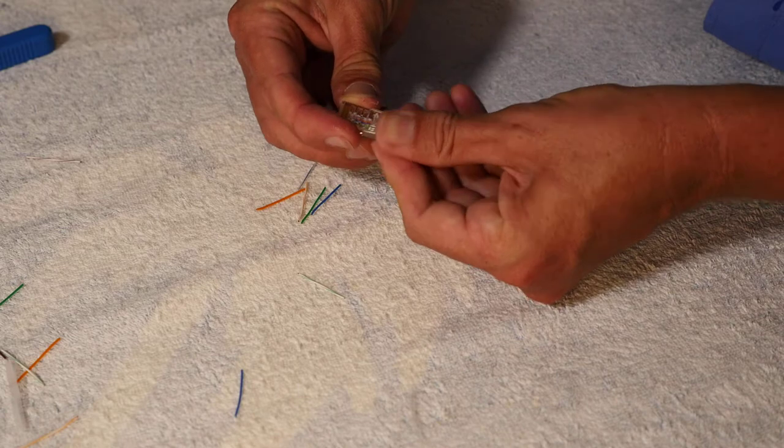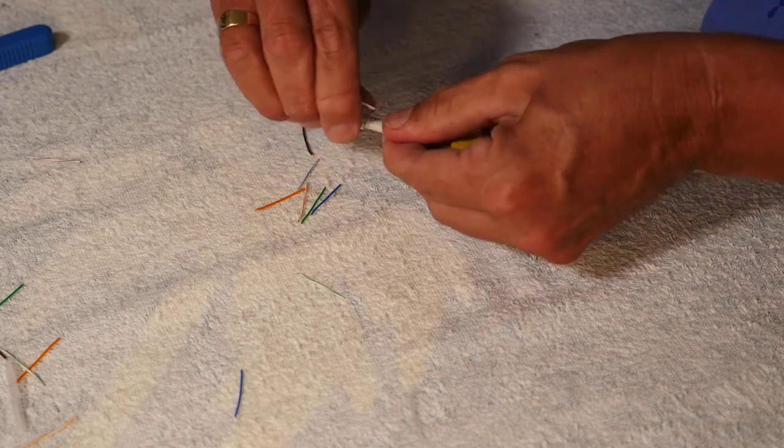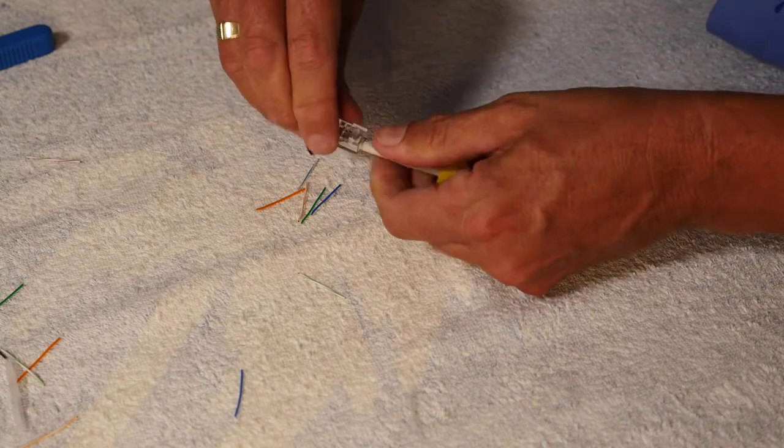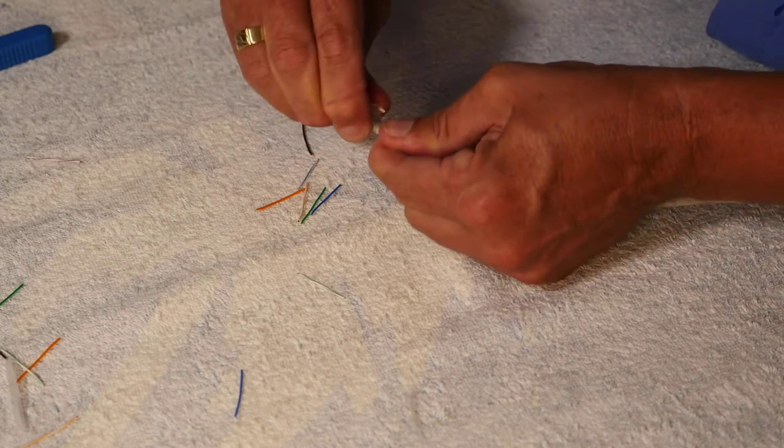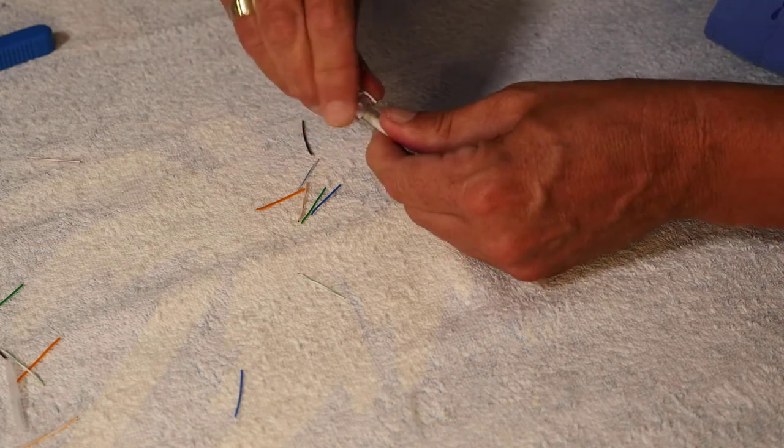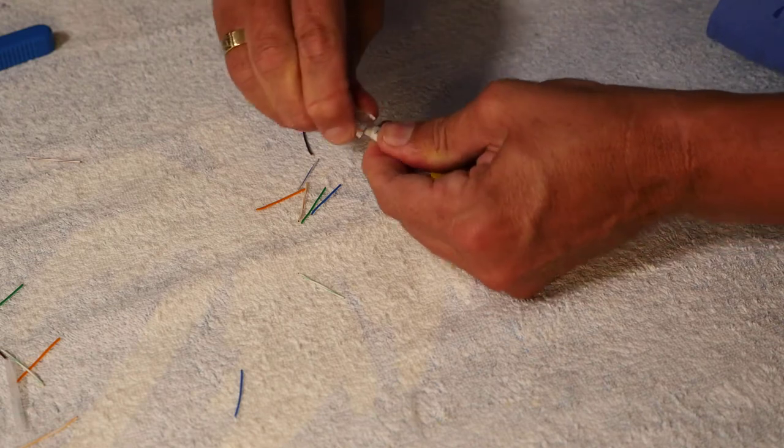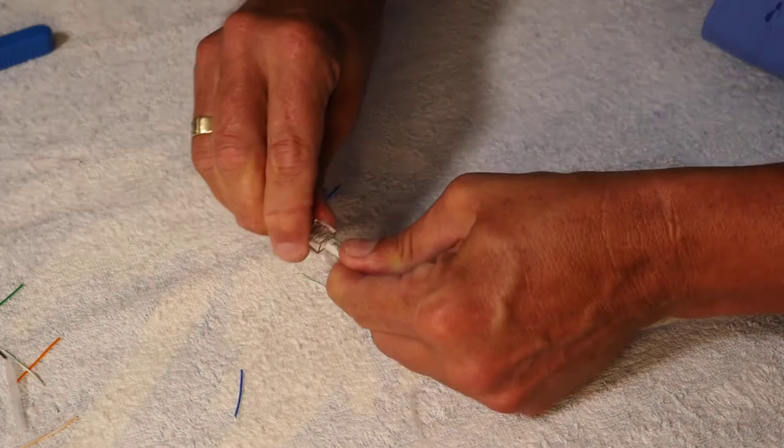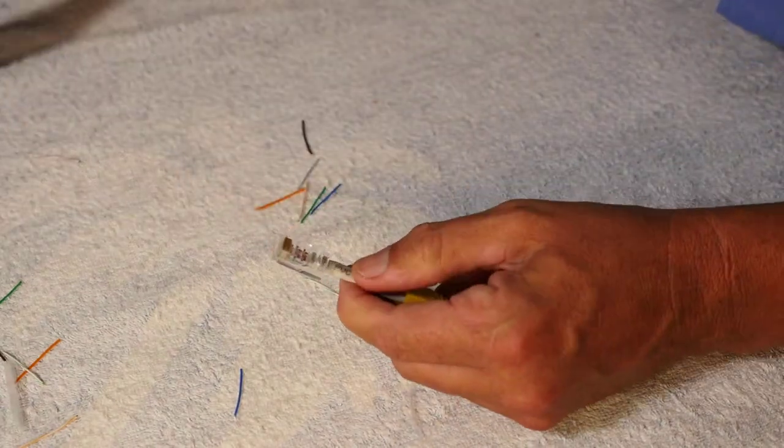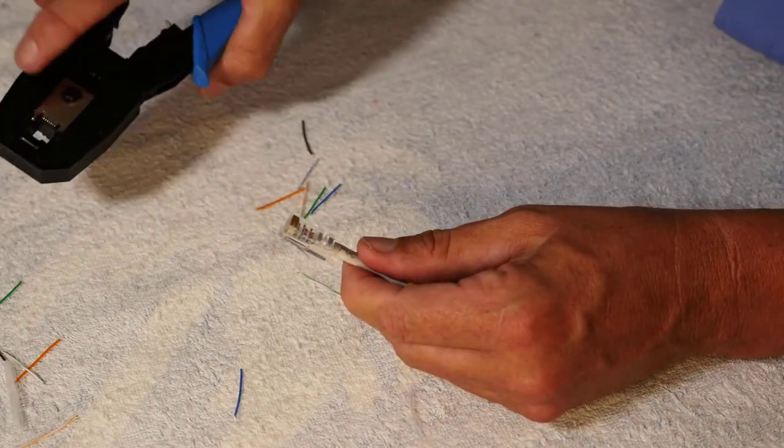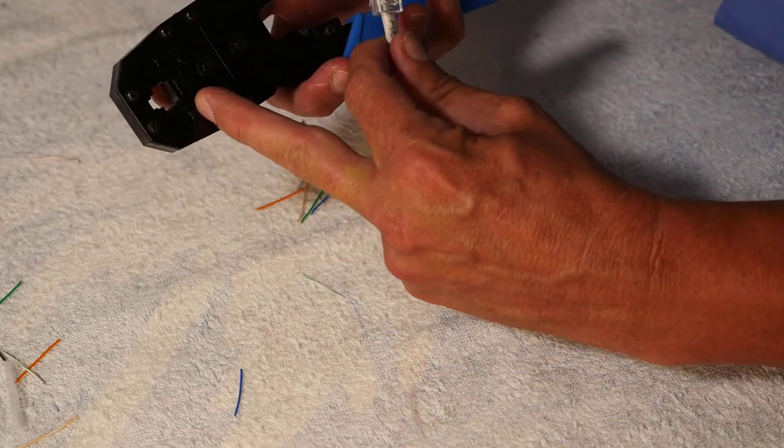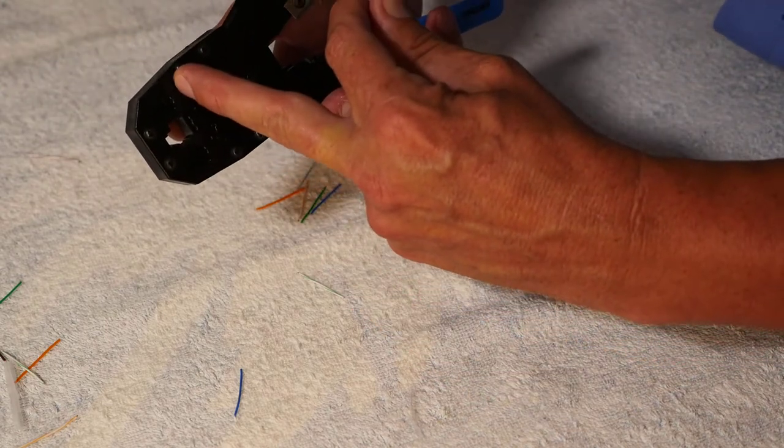Put on the RJ45, which is also called an 8P8C. So if you're looking for them, 8P for Peter and then the number 8C for cat. Put that on, another wiggle wiggle wiggle.